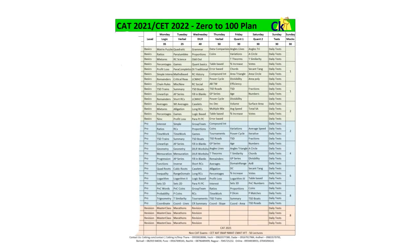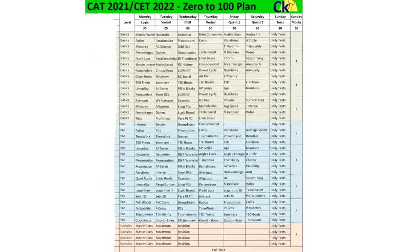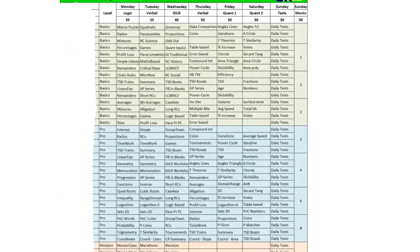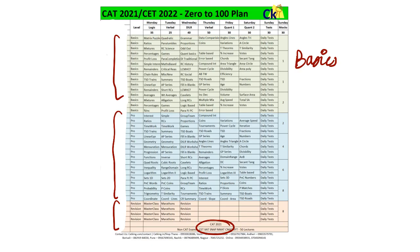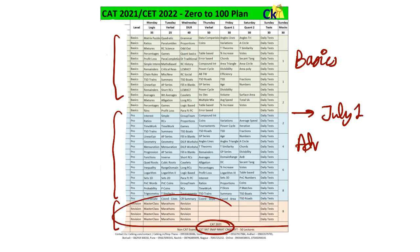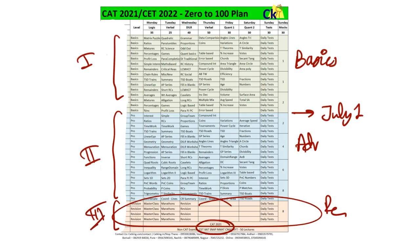This is the overall study plan for CAT 21 and non-CAT exams. I've divided the preparation into two parts. Part one is basics — complete the basics first, then go for the pro level, then revise everything before CAT 21. Step one covers the basics, then from July onward we go for the advanced pro level, and then the last one month is full revision. We are going to complete the syllabus three times before you sit for the CAT exam.